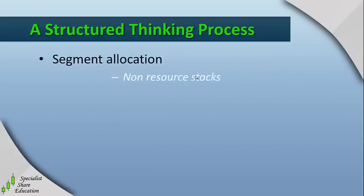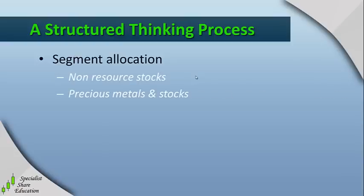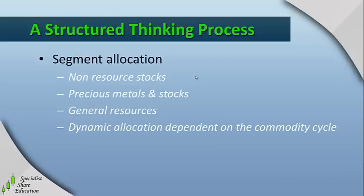The next thing we look at is the sector allocation. As I indicated before, I personally divide them into three sectors: non-resource stocks, which tend to be less volatile and less impacted by sudden moves in overseas markets or commodities; precious metals and precious metals stocks, which I treat in a separate category as I'm a long-term bull on gold; and my third allocation is to general resources. Now this is a dynamic allocation — it depends very much on the market and the commodity cycle at the time, so this is not something that's fixed. I'm constantly adjusting this every couple of months according to what the market is doing.